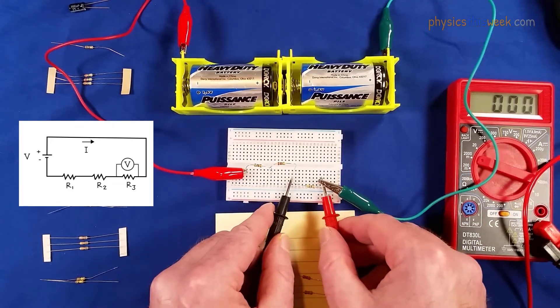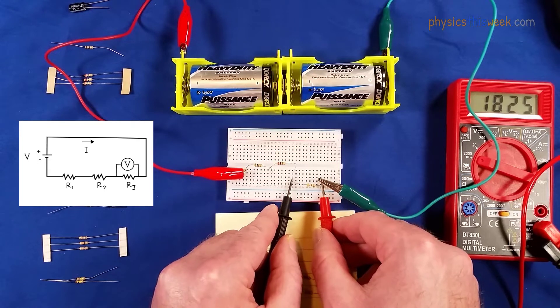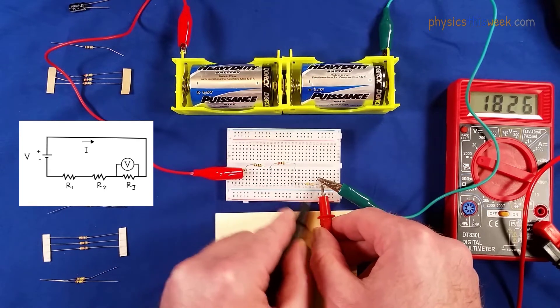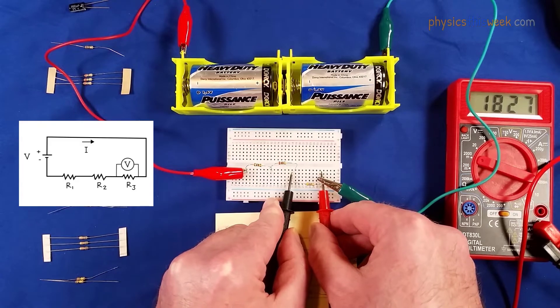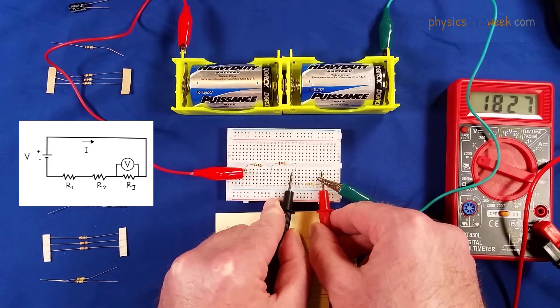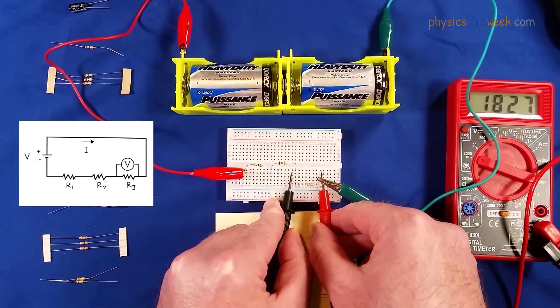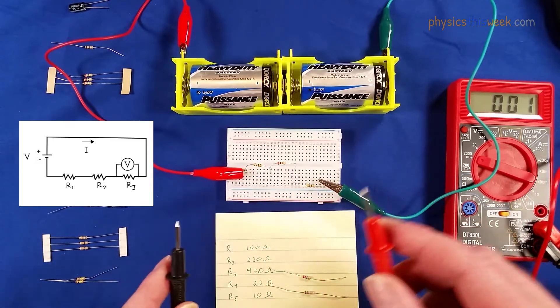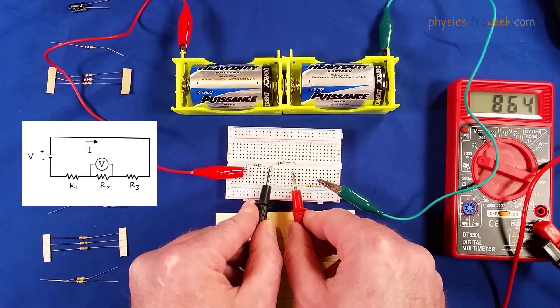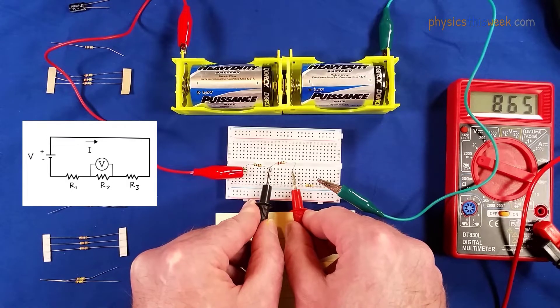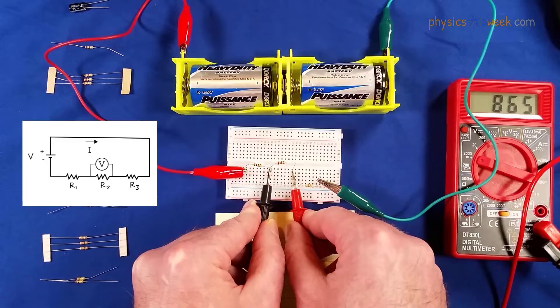Let's take these measurements again. So that is 1826, 27 millivolts. Make sure that you put it in the right units. There's the middle one.